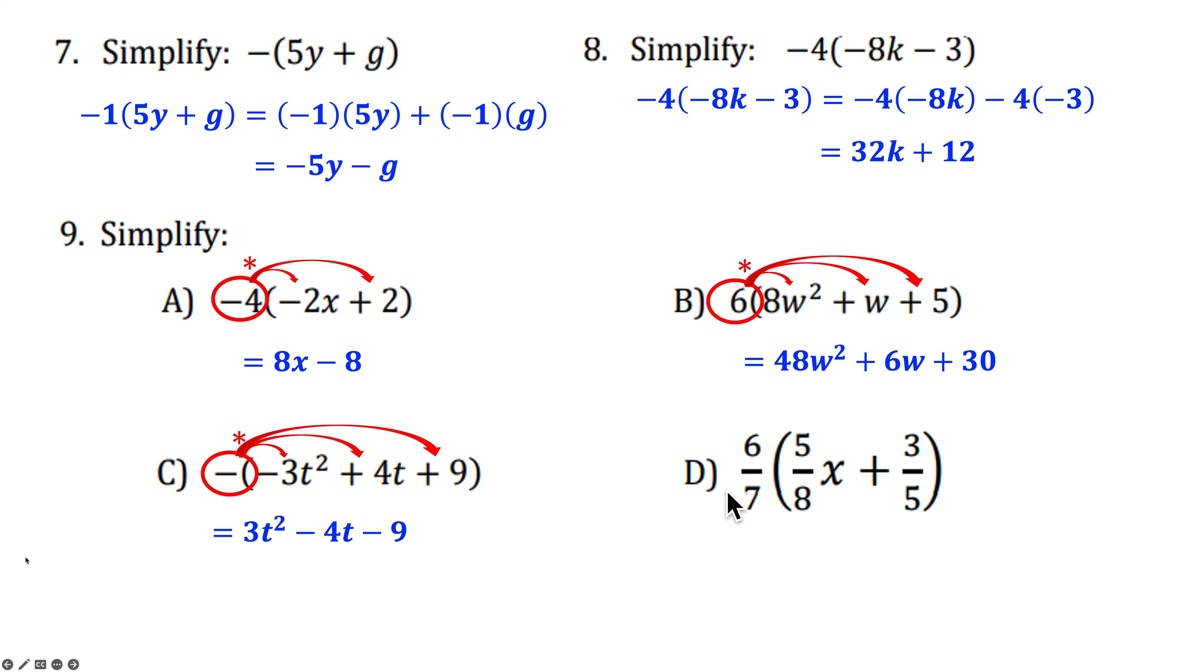We can even have fractions here. Multiply the 6 7ths to each fraction. So 6 times 5 is 30. 7 times 8 is 56. So 30 over 56, X. 6 times 3 is 18. 7 times 5 is 35. So I distributed the 6 7ths. Notice I didn't try to do any canceling. I don't want to cancel a 2 in the 6 and a 2 in the 8 because I don't want to change this to 3 7ths multiplying it to this fraction because I didn't have an opportunity to cancel with a 2 in the factor of 5. So straight multiply through. Cancel once the parentheses are gone. Now since they're both even, we reduce by 2. 15 over 28X minus 18 over 35.